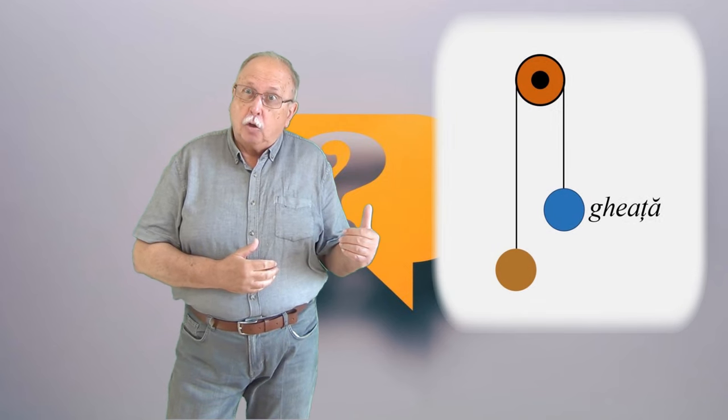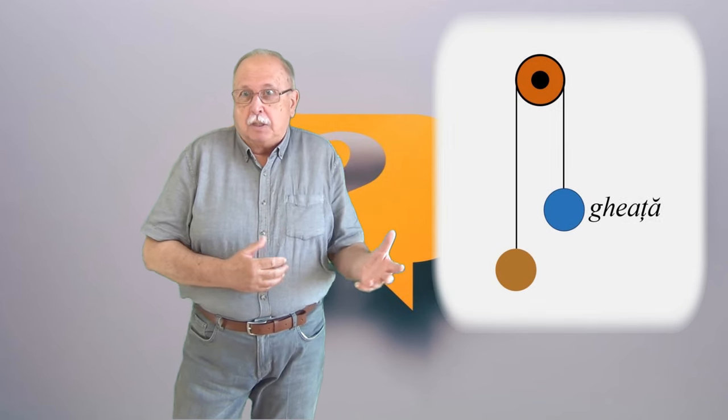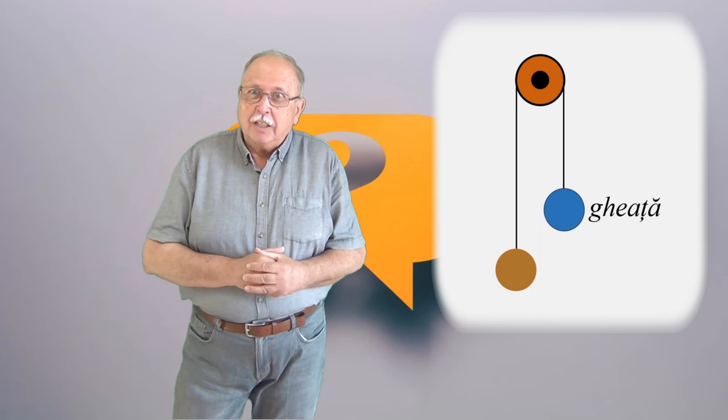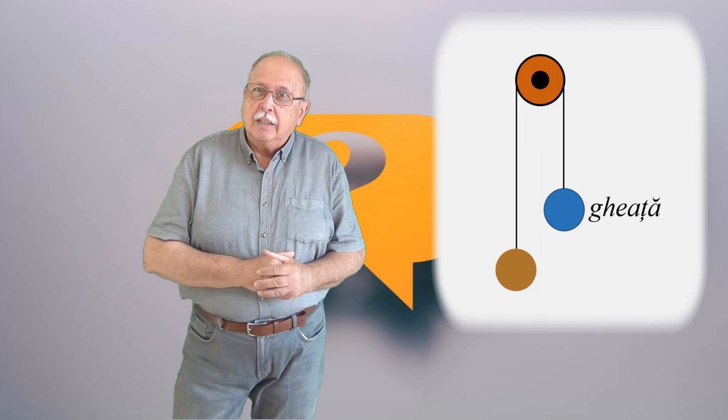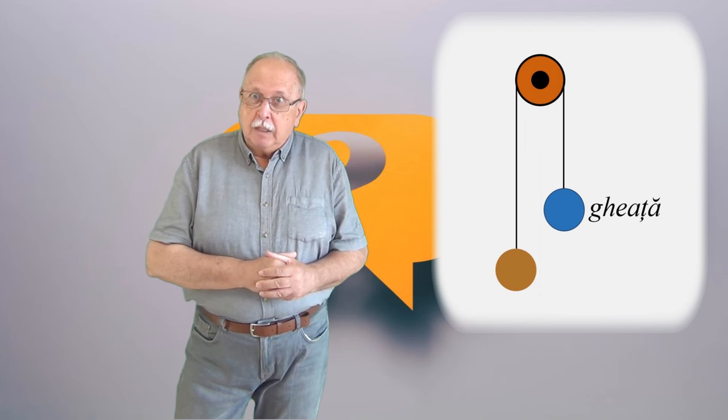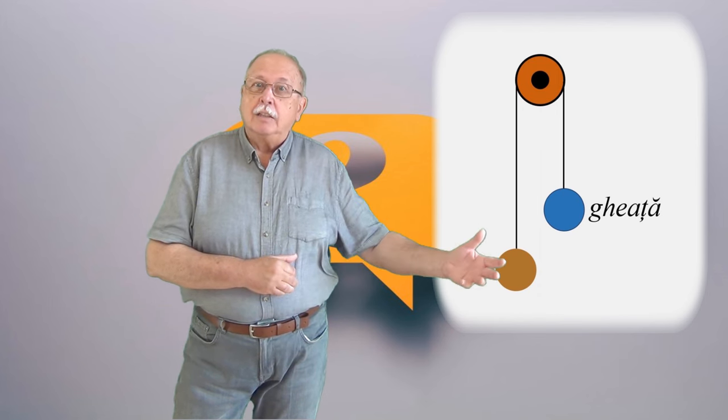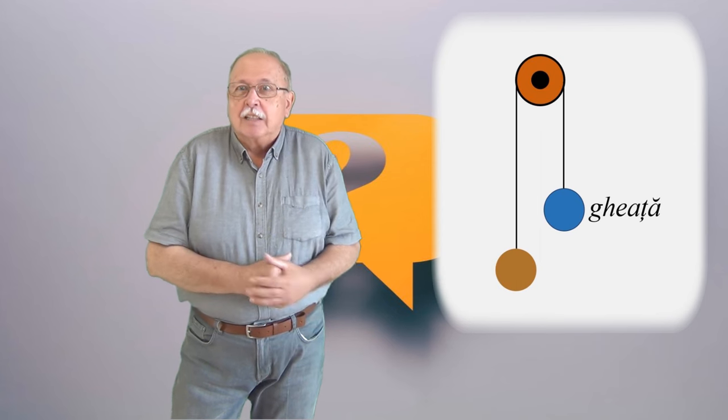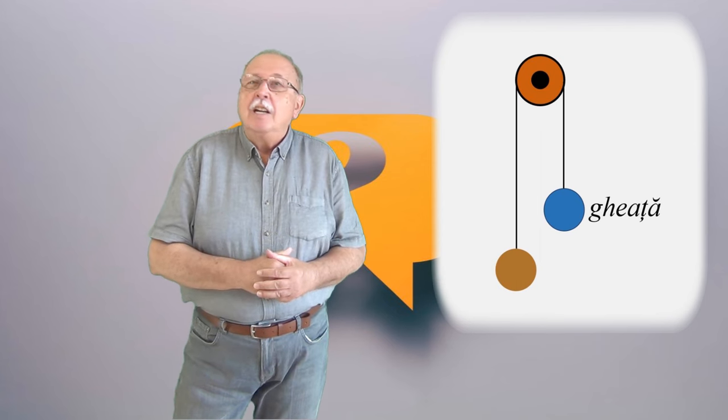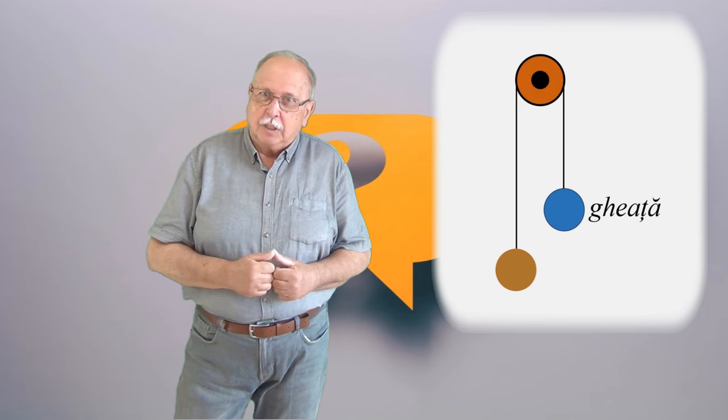Este ca și când am avea bila de o parte a unui scripete și de partea cealaltă o bilă de gheață, pentru că apa nu stă legată de fir, cu masa egală cu masa apei dezlocuită de bilă. Și bila de lemn poate să urce deoarece coboară bila de apă, apă solidă, gheață, dar asta nu are importanță pentru ceea ce discutăm.